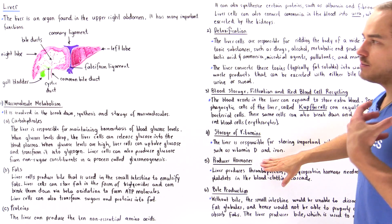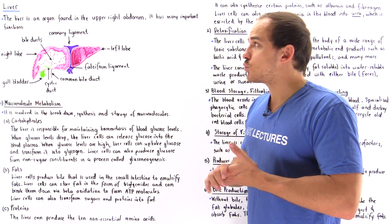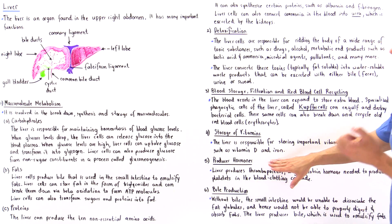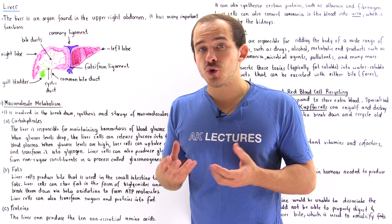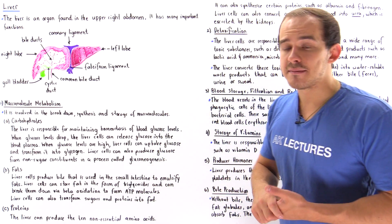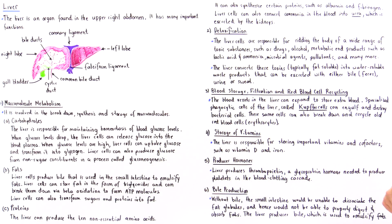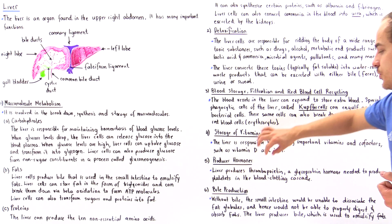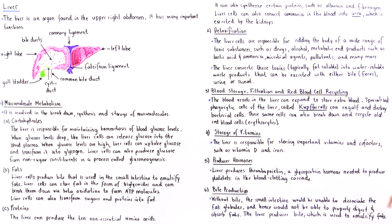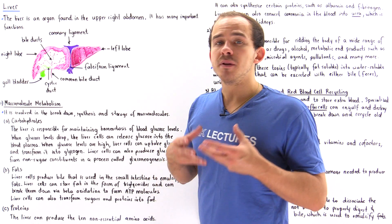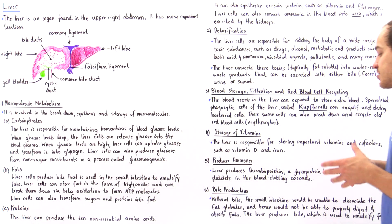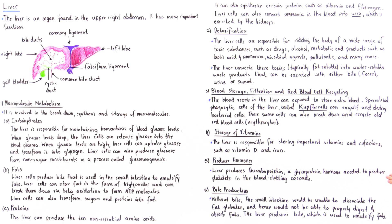The liver can also act as an endocrine gland — it can produce a special type of protein that acts as a hormone. The liver produces thrombopoietin, a glycoprotein hormone responsible for controlling the blood clotting cascade and producing platelets involved in the blood clotting process.